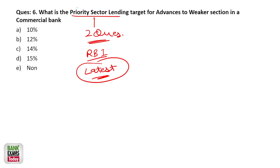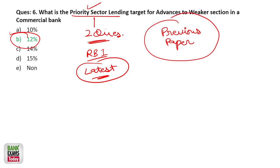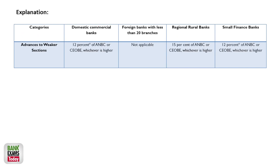Advances to weaker sections — the target for commercial banks is 12%. Please remember that. For RRBs it is 15%, and for small finance banks it is 12%. This exact question was asked in the previous Bank of Maharashtra paper — two questions came from priority sector lending. In every exam, typically two questions come from this topic, so please remember these figures.